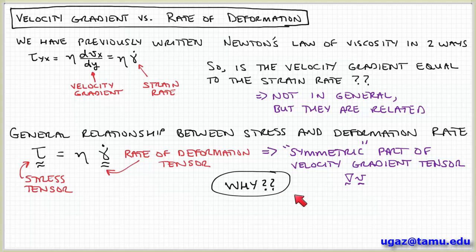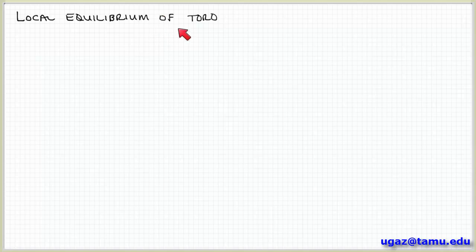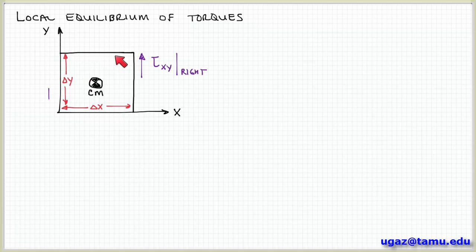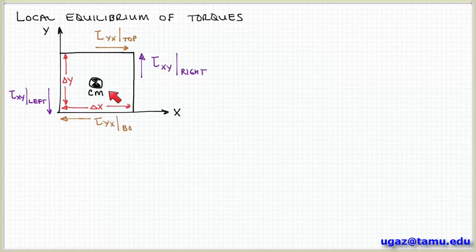The question then is why — why is it not equal to the velocity gradient, or what's the nature of this relationship between stress and deformation in general? To explain this I'm going to present an argument based on equilibrium of torques applied to a small, actually infinitesimally small, element of fluid denoted here by this box. I'm looking at a small chunk of fluid denoted by the square, which has a width delta x and a height delta y. The cm in the center represents the center of mass associated with this fluid element.